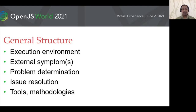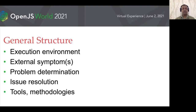Today I have five topics in hand. For each issue, I'll start with the execution environment where the issue is recorded, how the issue is manifested externally, the proceedings towards problem determination, what the actual issue was, and how it got resolved. Then I'll cover the tools, methodologies, and best practices I followed, as well as the learnings and insights that are reusable.